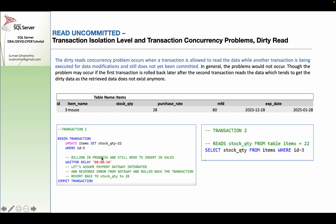How? In transaction 1, you roll back the error — the value rolls back to 20. If transaction 2 reads the value of 22 before the rollback, that is a dirty read. If the transaction is not committed, it will result in a dirty read.